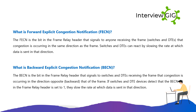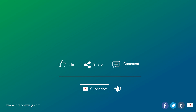What is Backward Explicit Congestion Notification (BECN)? BECN is a bit in the frame relay header that signals to switches and DTEs receiving the frame that congestion is occurring in the direction opposite to that of the frame. If switches and DTE devices detect that the BECN bit is set to one, they slow the rate at which data is sent in that direction. Like, share, and comment — don't forget to click the subscribe button and the bell button for latest updates.